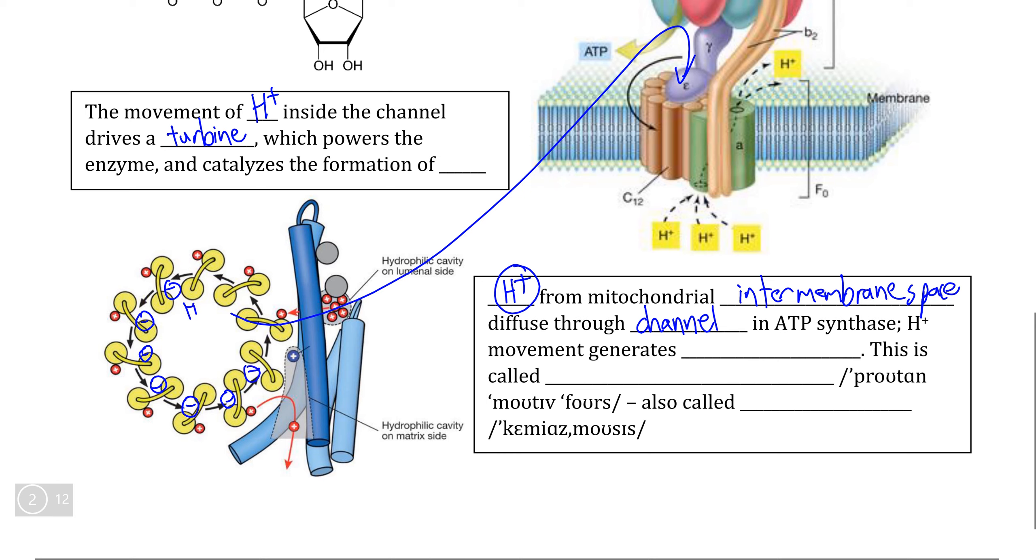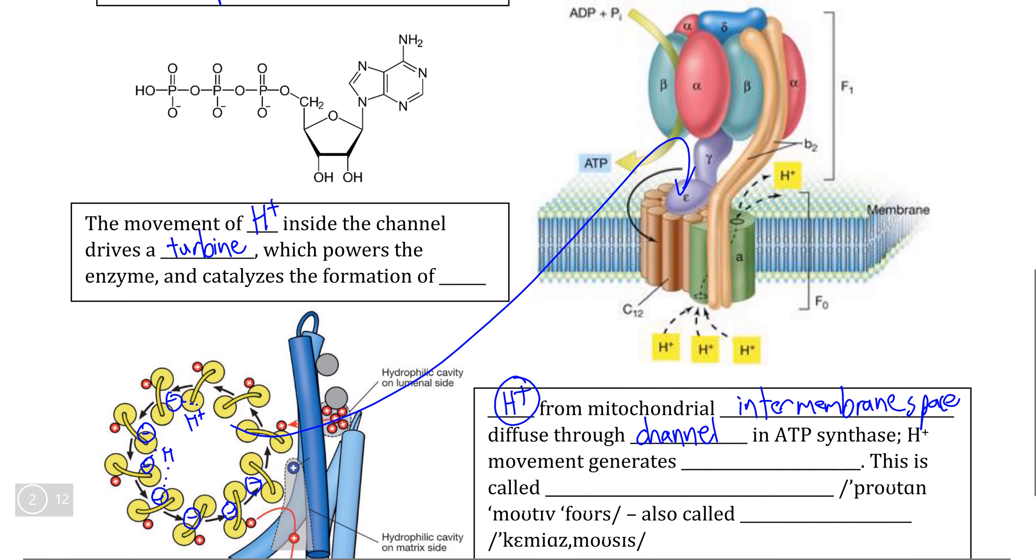This wheel that actually literally does spin has R groups that are negatively charged in its tertiary structure here. And this allows H plus to form temporary ionic interactions with these negative charges.